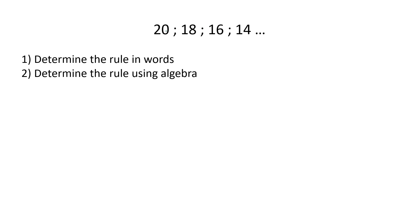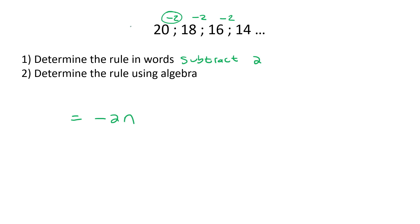Now here's one where you are going minus two each time. The rule in words: subtract two. For the algebraic rule, you take that minus two and put an N. Then you have to imagine what would this number be before the sequence — that would have to be 22, because 22 minus two gives us 20. So we say positive 22. TN = -2N + 22. There is the rule.